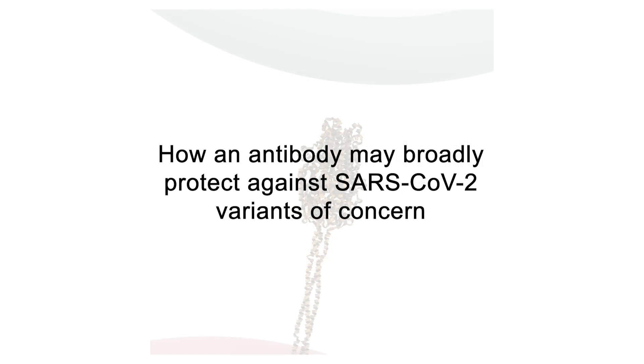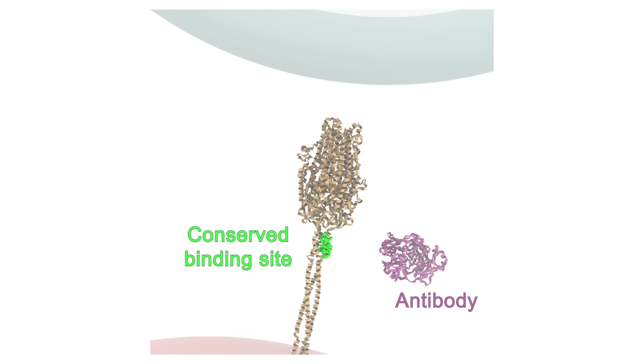Now we will see how an antibody can stop the spike and provide broad protection against many variants of this virus. The antibody must bind a site on the spike protein, which is shown in green.